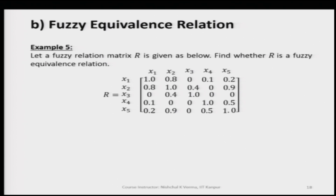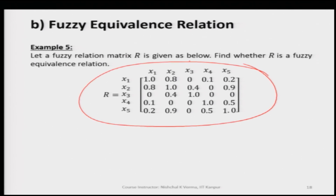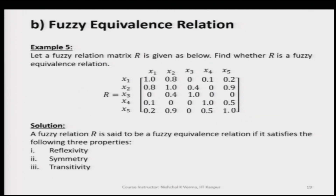Now let us take another example and see whether in this example the fuzzy relation matrix R is a fuzzy equivalence relation or not. This is the fuzzy relation R that has been given, and again we have to check for all three properties before we can say that R is a fuzzy equivalence relation.